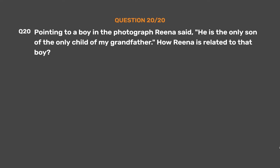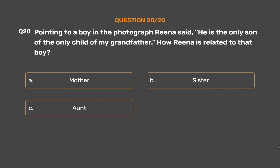Question number 20. Pointing to a boy in the photograph, Rina said, 'He is the only son of the only child of my grandfather's mother.' How is Rina related to that boy? Option A: Mother. Option B: Sister. Option C: Aunt. Option D: Cannot be determined.